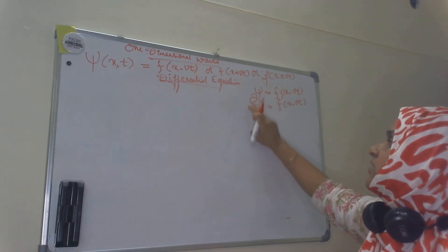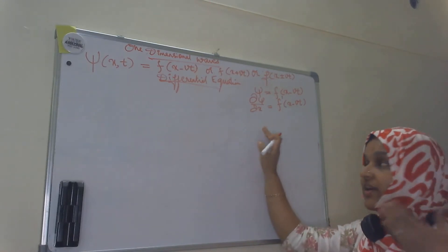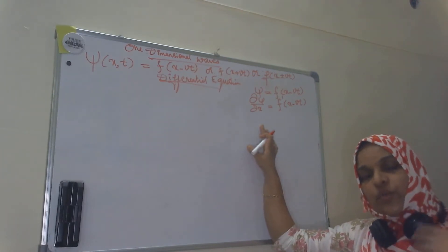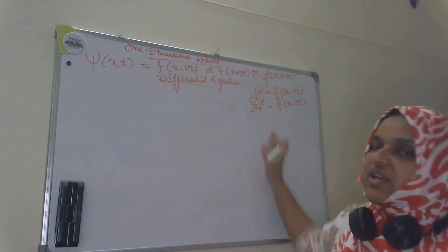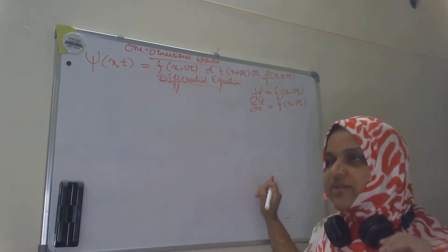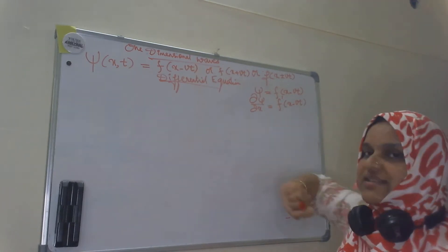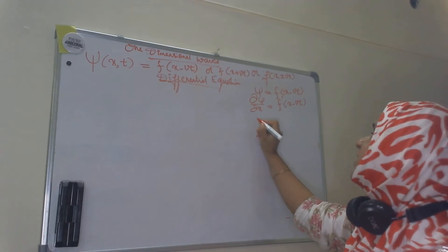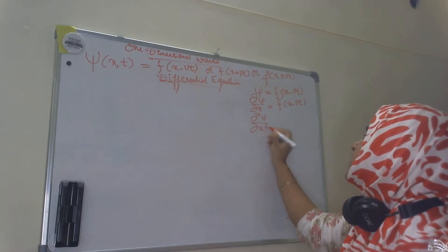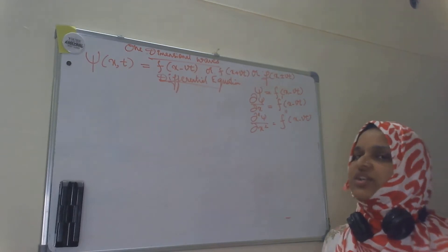We use the symbol ∂/∂x because we are taking the partial derivative, which applies when a function has more than one variable. If a function depends on more than one coordinate, you can take the partial derivative with respect to one coordinate by considering all other coordinates as constants. Here we take the derivative with respect to x keeping t constant. The second derivative is ∂²psi/∂x² = f''(x − vt), which is the second derivative of function f.